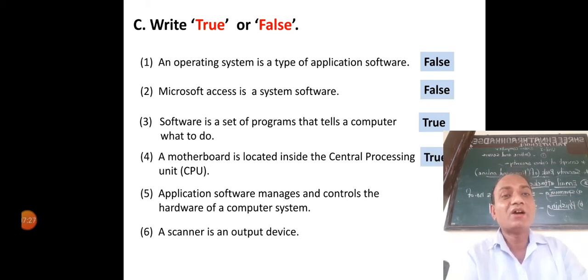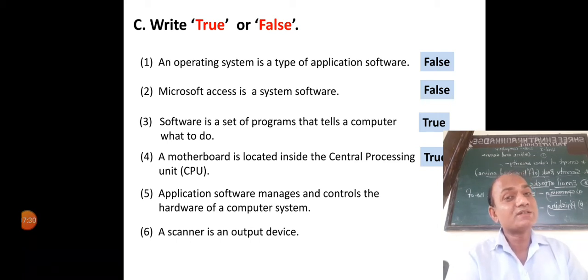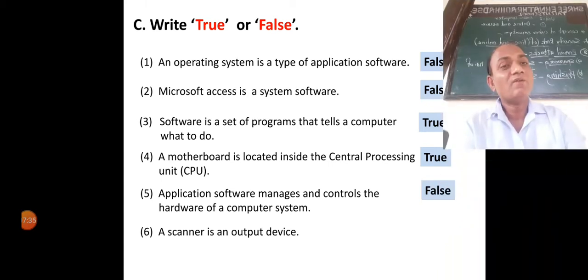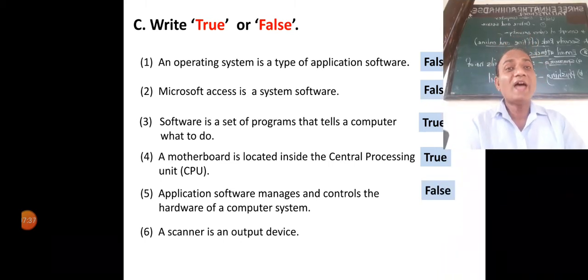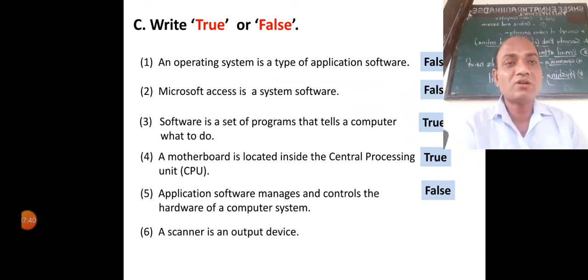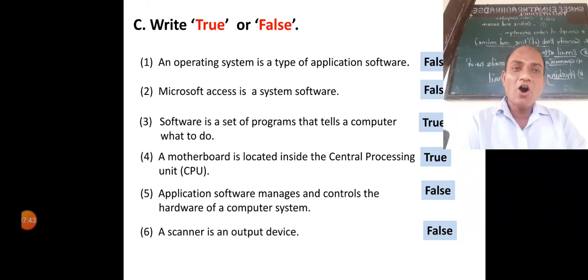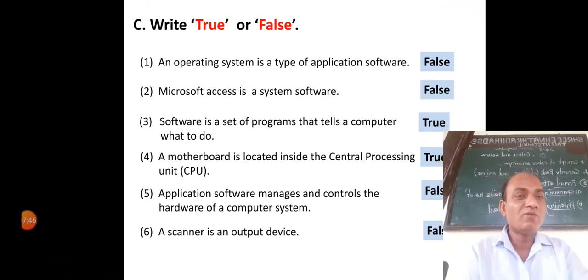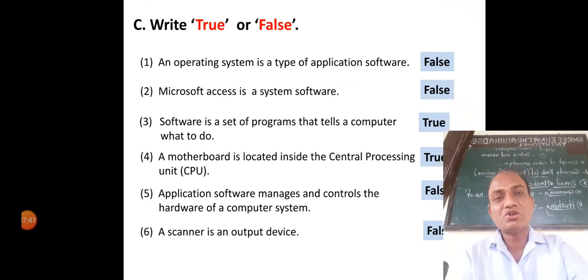Fifth statement — algorithm is a computer and the computer system. This statement is false.